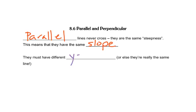Now they must have a different y-intercept. If they have the same slope and the same y-intercept, then they're really the same line. So parallel lines are different lines, they just have the same slope.